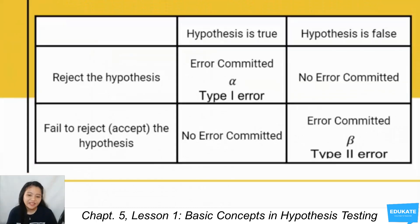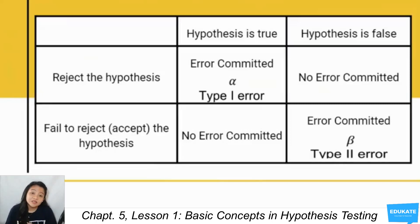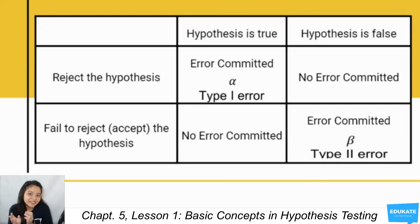The table shows that there are no errors committed when we reject a false hypothesis and when we fail to reject a true hypothesis. On the other hand, an error is committed by rejecting a true hypothesis — this is called a type 1 error, denoted by the symbol alpha (the Greek letter A). The error committed by failing to reject or accepting a false hypothesis is called a type 2 error, denoted by the symbol beta (the Greek letter B).